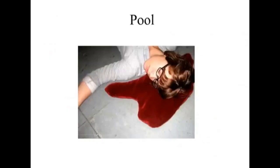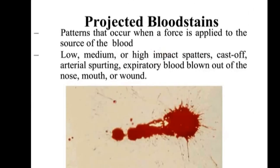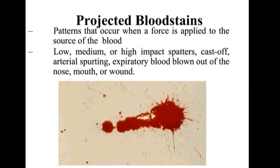A pool of blood is another passive blood spatter. Projected bloodstains are when there's additional force behind the movement of the blood. These are going to be low, medium, and high impact spatters, cast-off, and arterial spurting. Expiratory blood — for example, if someone gets their throat slashed and as they exhale it sprays blood out, or if you get a bloody nose and you sneeze — same idea.